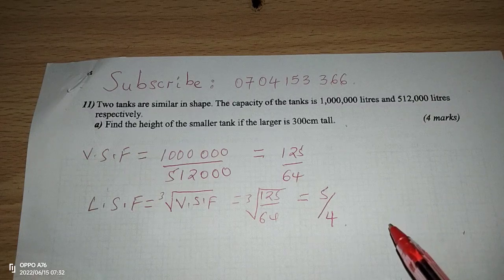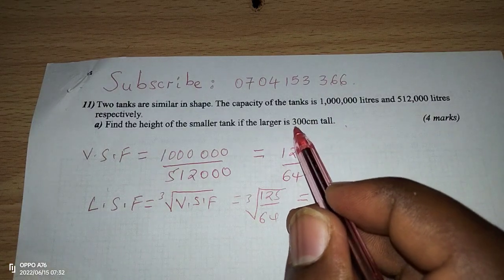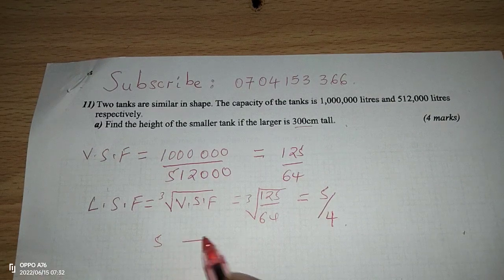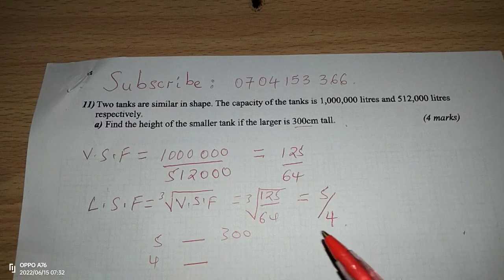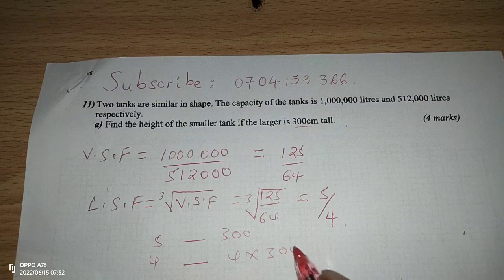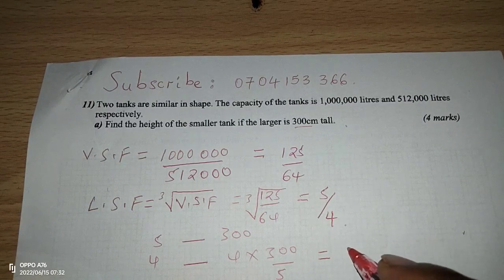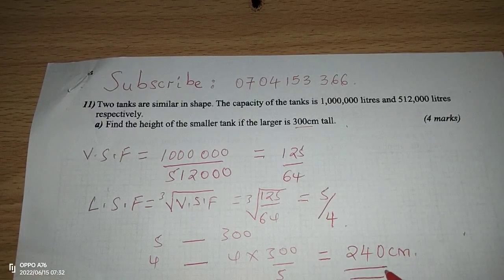Now that we have the linear scale factor, we can relate the two heights to obtain the height of the smaller tank. So 5 corresponds to the height of 300 centimeters. What about 4, the smaller tank? This gives us 4 multiplied by 300 divided by 5, which equals 240 centimeters. So 240 centimeters is the height of the smaller tank.